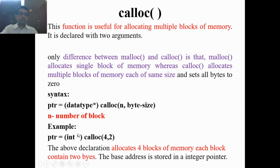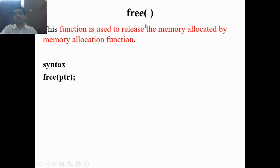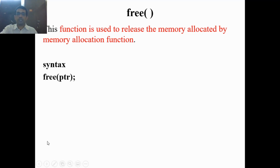We can use whatever type we want to store — for example, to store a float we can give float star and the pointer should be a float pointer. Likewise, we can use it for character also. Next, the free() function — this function is used to release the memory allocated by memory allocation functions. The memory allocated by malloc(), calloc(), and realloc() is released using the free() function. Within the free() function we have to pass the pointer variable which holds the memory address returned by malloc() or calloc().